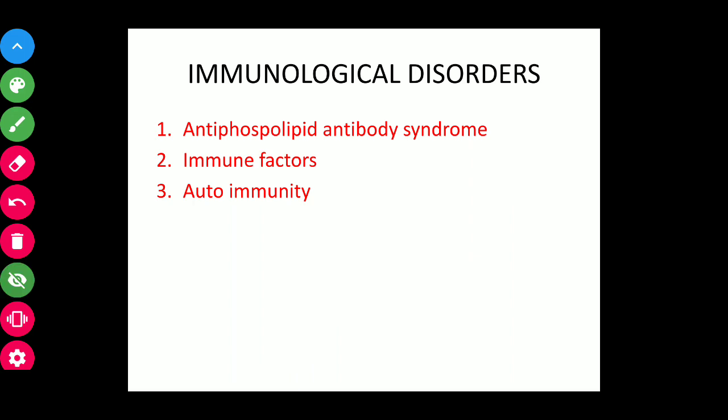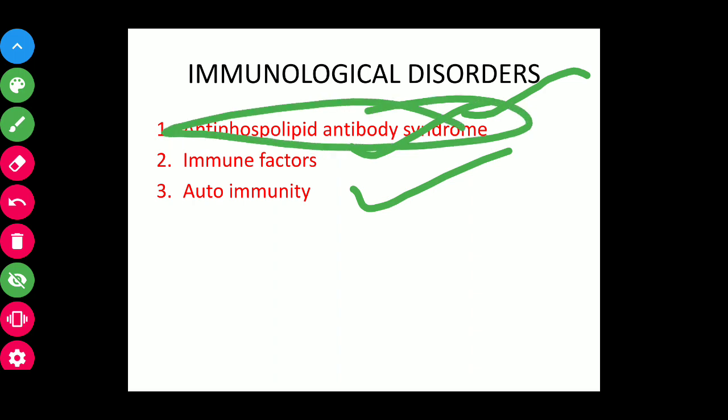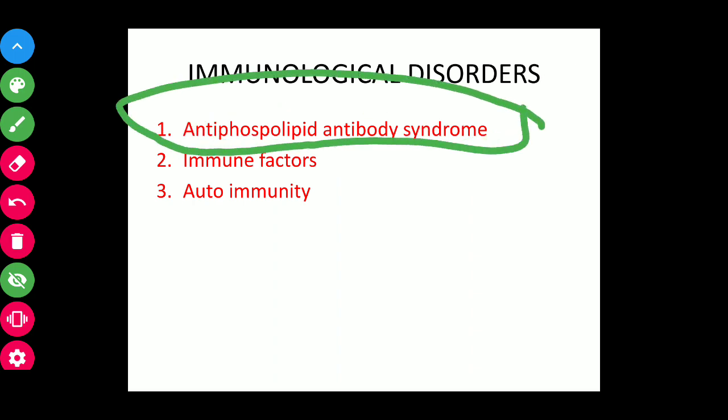Next are immunological disorders, including antiphospholipid antibody syndrome, immune factors, and autoimmunity. Antiphospholipid antibody syndrome is due to the presence of antiphospholipid antibodies, which may cause inhibition of trophoblast function and differentiation, activation of the complement pathway, release of local inflammatory mediators, and sometimes thrombosis of uteroplacental vasculature.